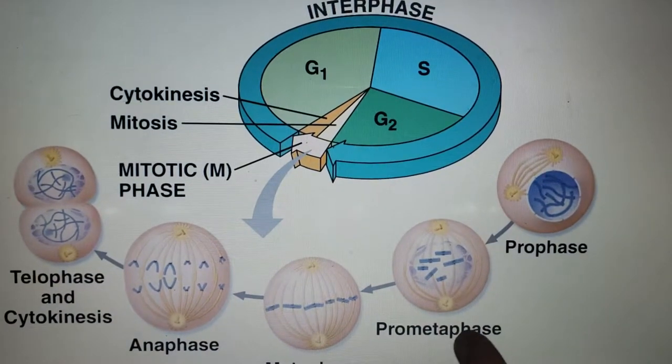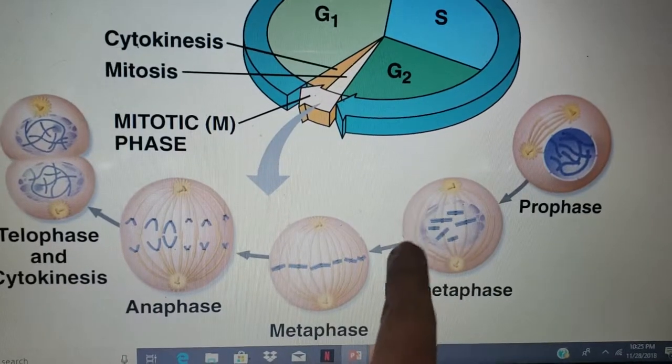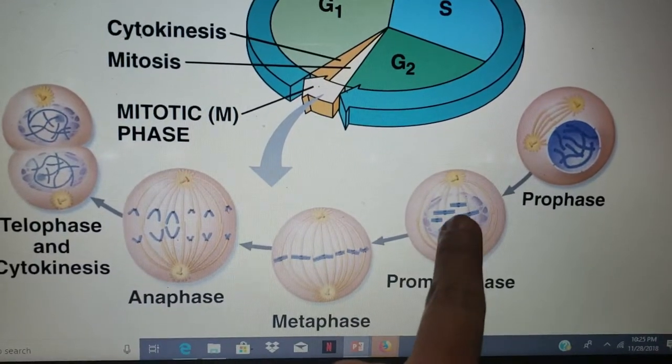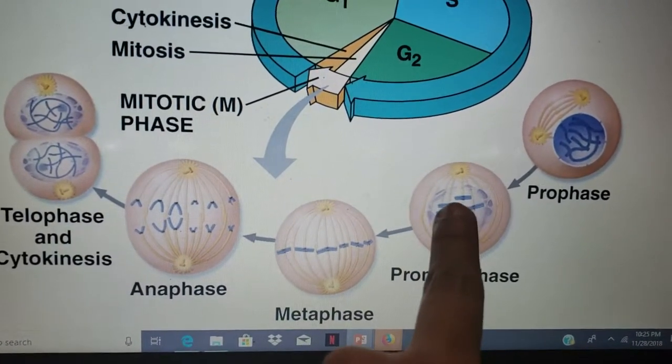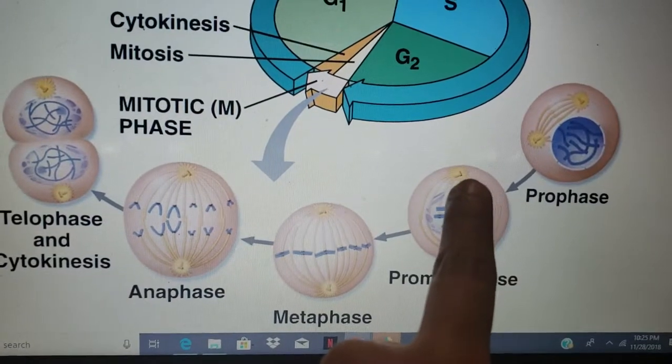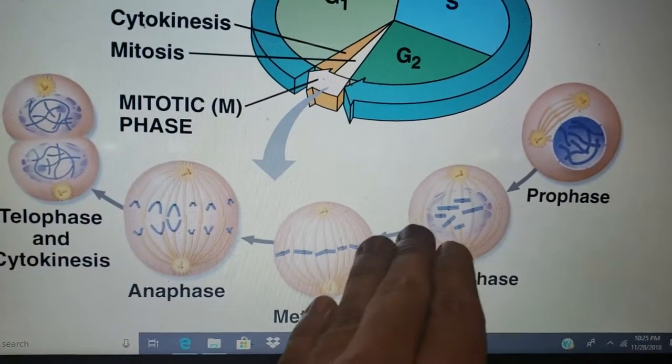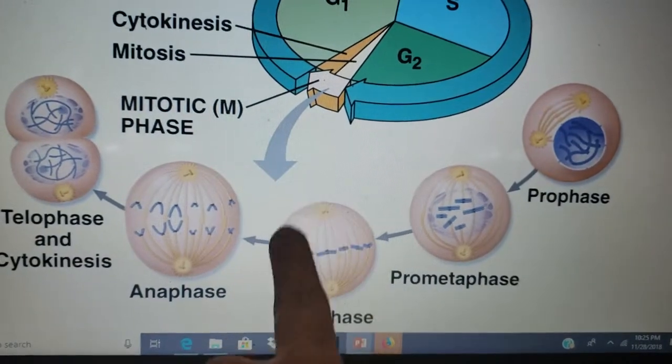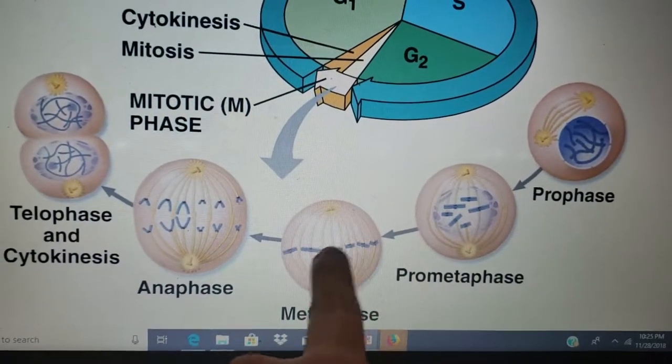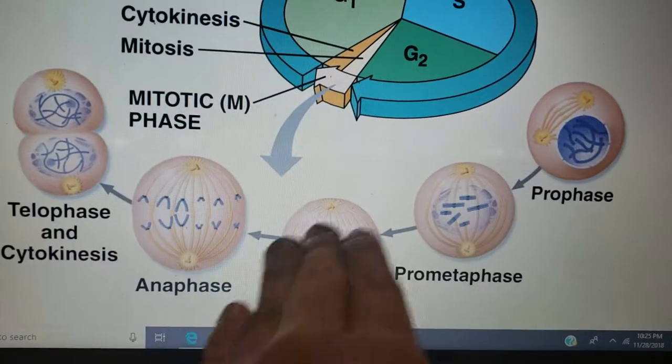In prometaphase, the mitotic spindles attach to the chromosomes and they start moving towards the middle of the cell. Then we have metaphase, where we see the chromosomes already in the center of the cell.